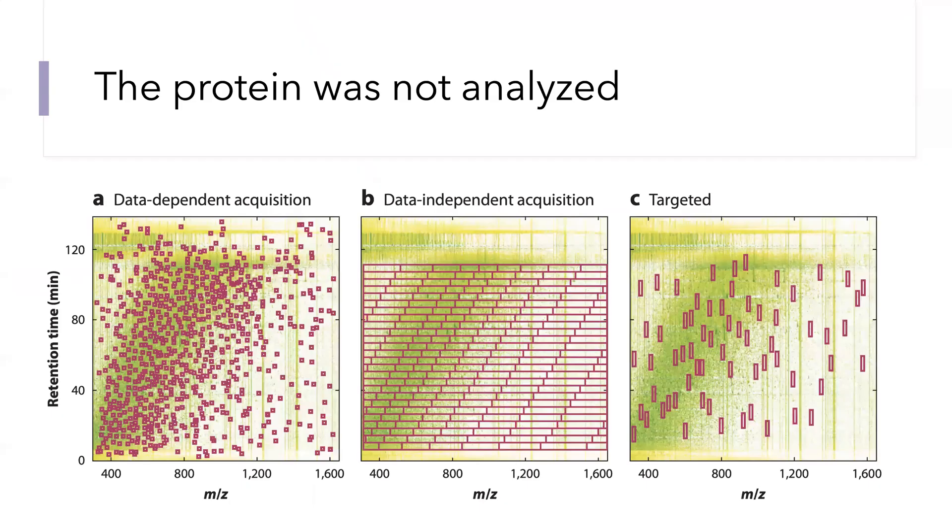The first and very common mechanism for missing values is when a protein or its peptides are not analyzed. The data were never acquired, and this happens with different types of data acquisition as illustrated with data dependent acquisition, data independent acquisition, and targeted acquisition.